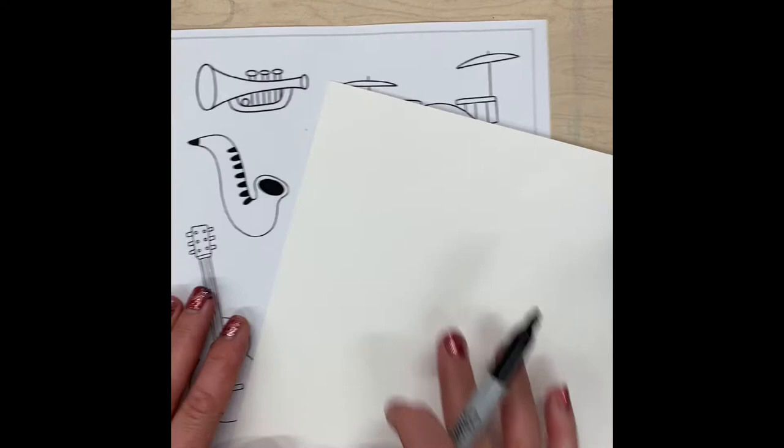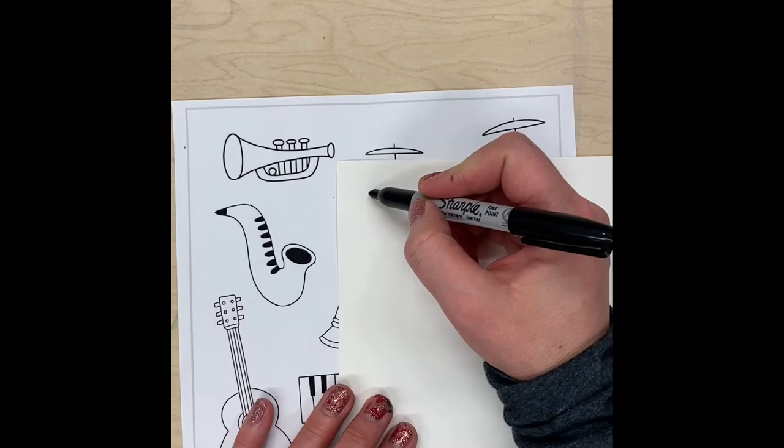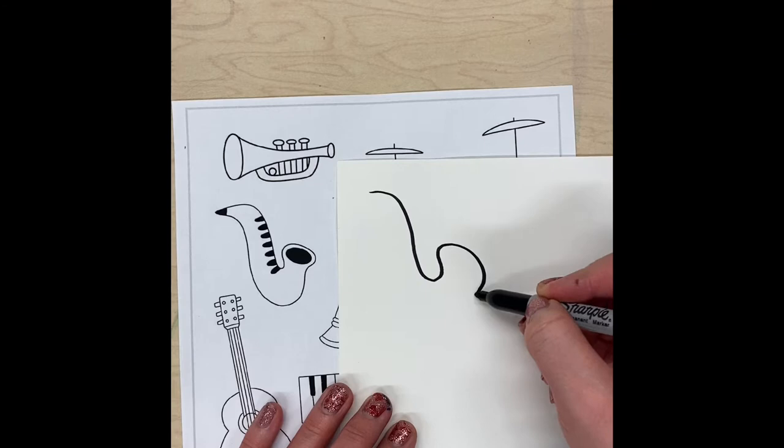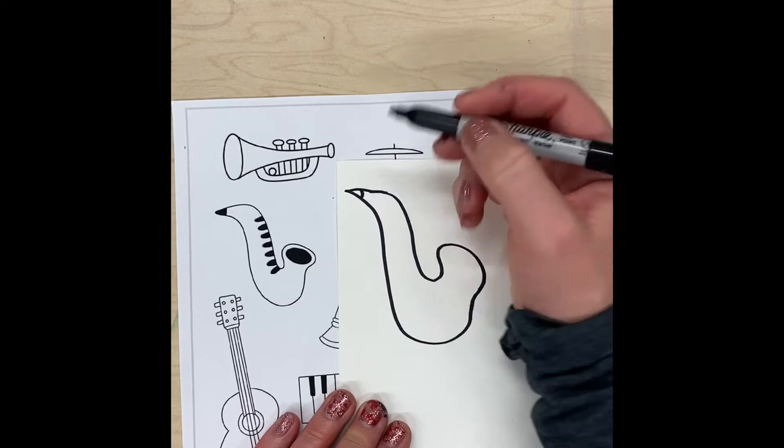I have a scrap paper and I'm going to try to draw the saxophone just a little bit larger. We don't have to worry too much about making it exactly like the picture. The picture is just there to help us with a basic shape.